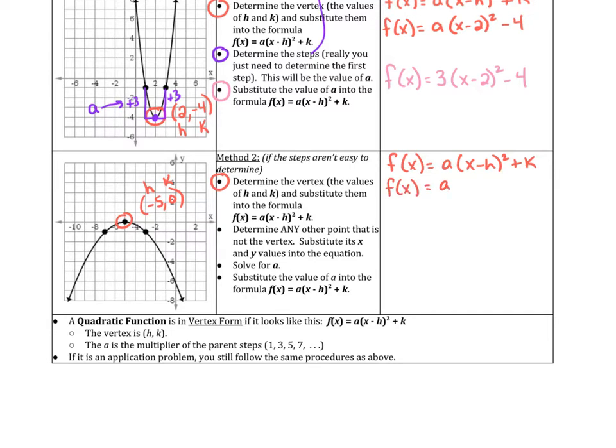So when h is negative 5, it's x minus negative 5, so that becomes x plus 5. And the k is 0. And you don't need to write the 0.